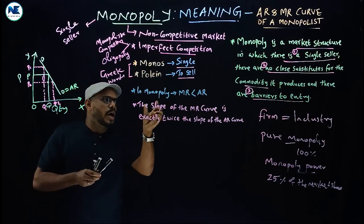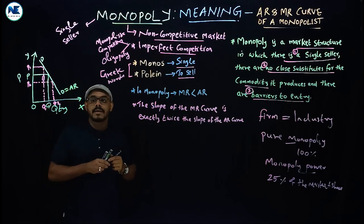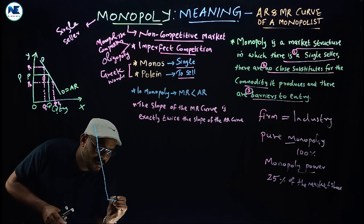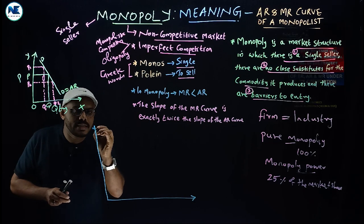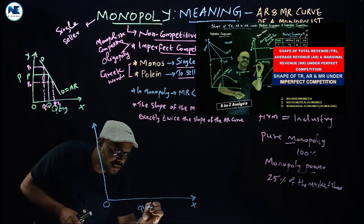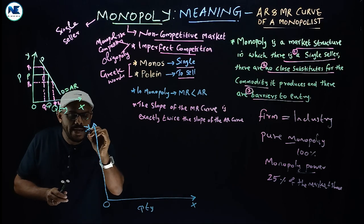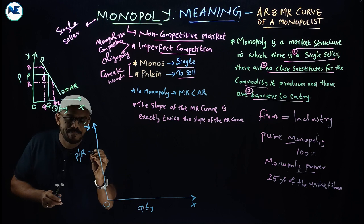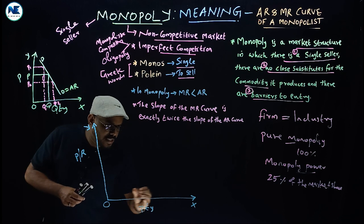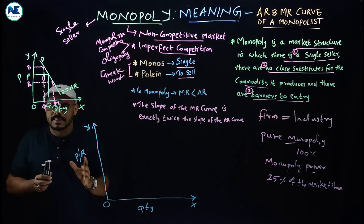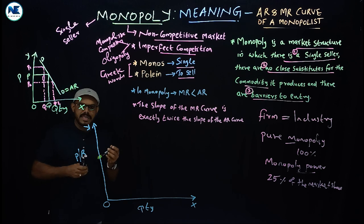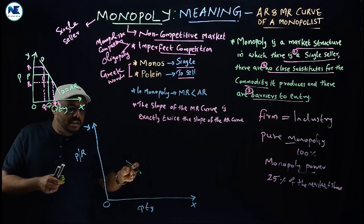Now we can draw the average revenue curve and also the marginal revenue curve — very, very important, please listen carefully. On the x-axis we take quantity or output, and on the y-axis we take price and also revenue. You must represent both axes correctly: the x-axis is the horizontal axis and the y-axis is the vertical axis, with the correct variables on each.